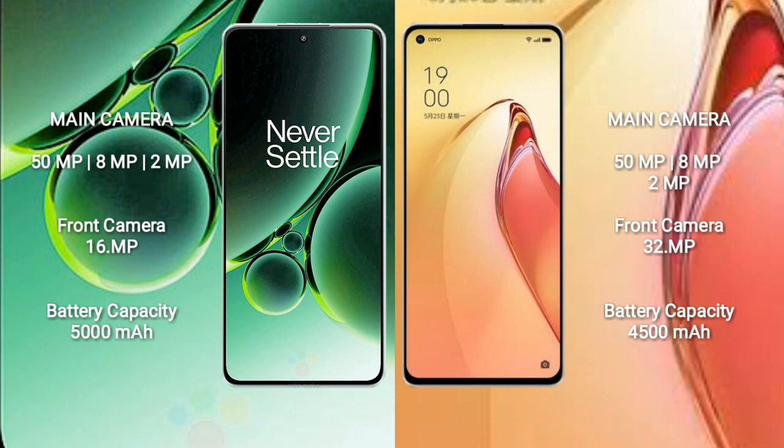OnePlus Nord 3 features a rear triple camera setup: 50MP plus 8MP plus 2MP, and a 16MP front camera. OPPO Reno 8 Pro Plus also has a rear triple camera setup: 50MP plus 8MP plus 2MP, and a 32MP front camera.